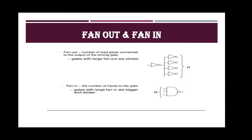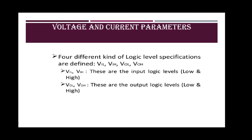The next one is voltage and current parameters. Here you can see there are different kinds of voltage logic level specifications. VIH minimum is referred to as high level input voltage, and it is the minimum voltage level that is required for a logic one at an input.